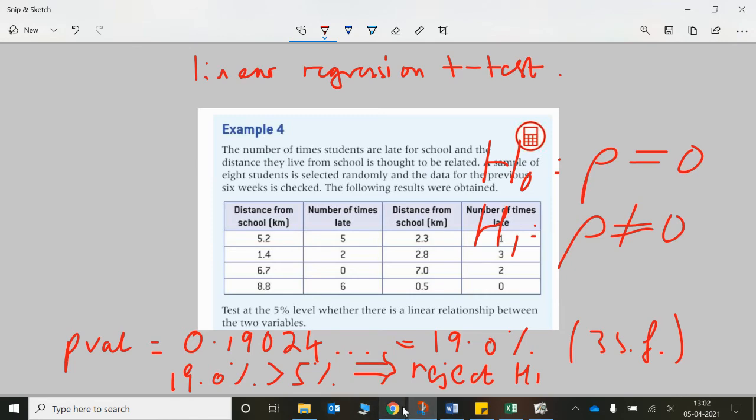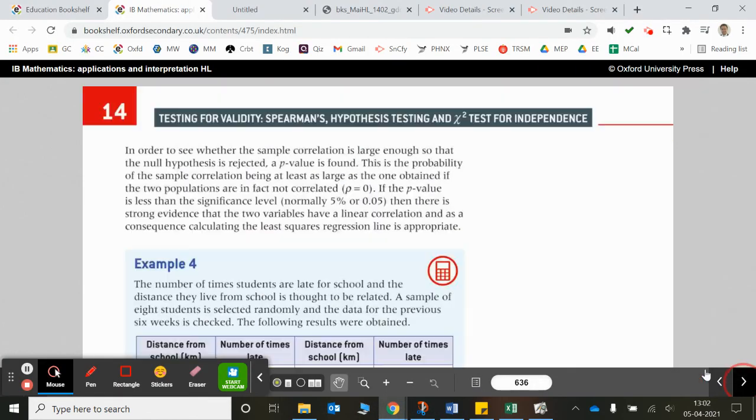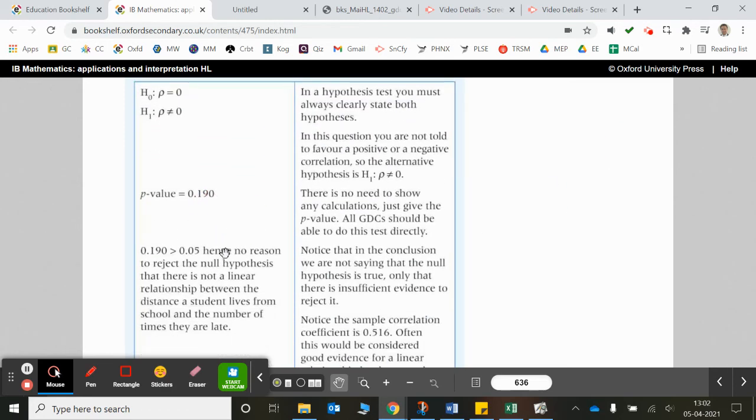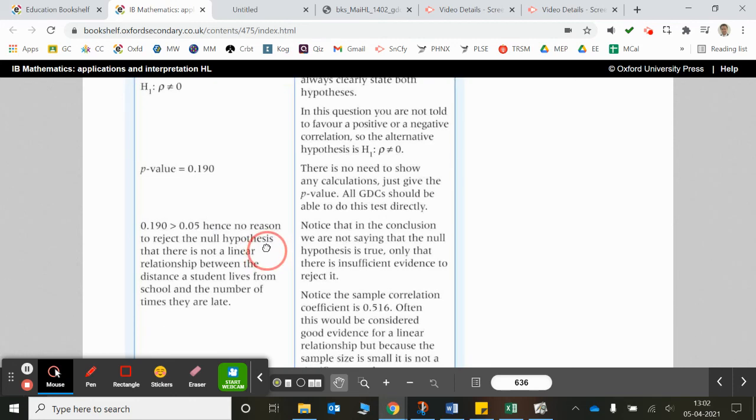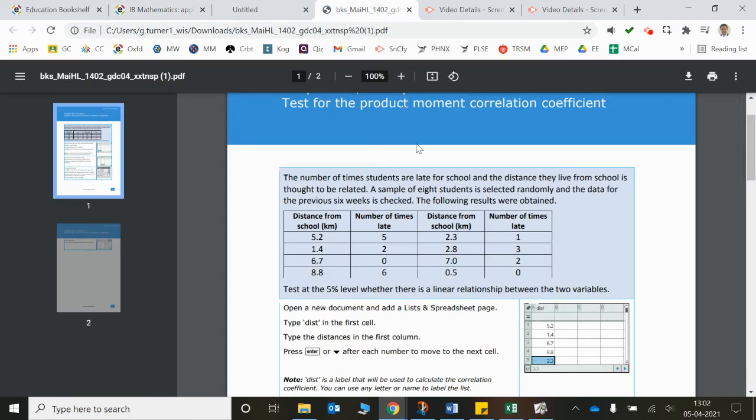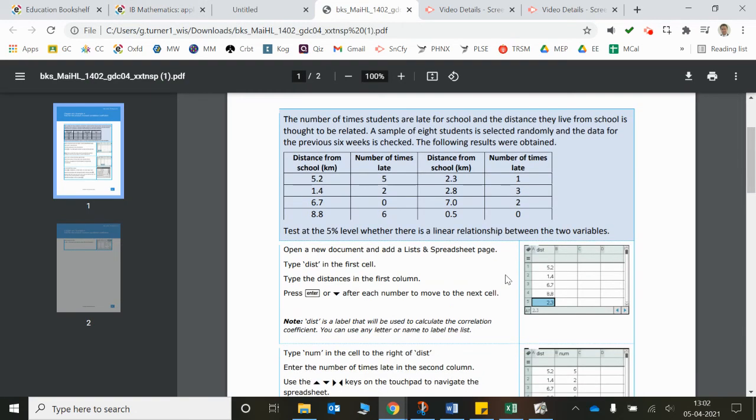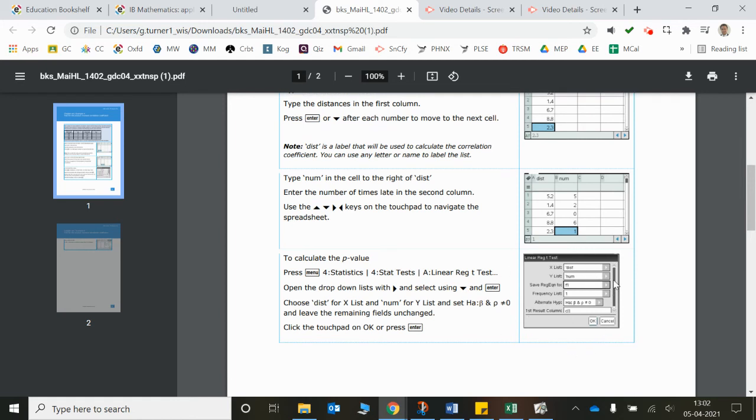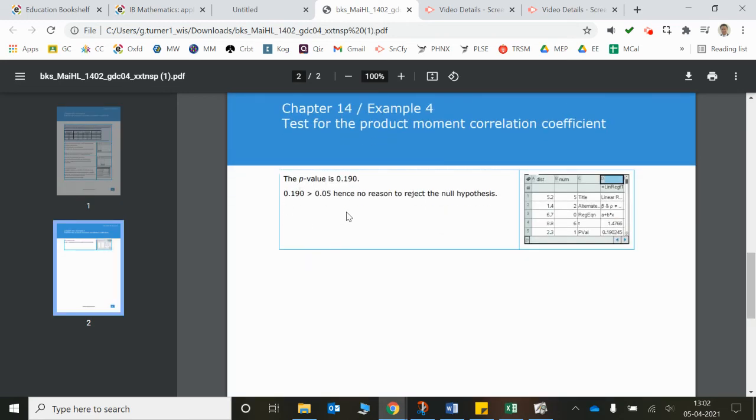Now let's just check that one in the book as well. So let's see what they write for the answer there. They're getting the same, 19.0%. Hence, no reason to reject the null hypothesis. We are not in the 5% critical region. Now let's have a look at how they do this one on the calculator. Same. Again, they're putting in the information. There's the little box you'll come up with on the TI-Inspire. So that's the rho is not equal to zero. That's what we're going to test as the alternative hypothesis. There you go, it's really straightforward.